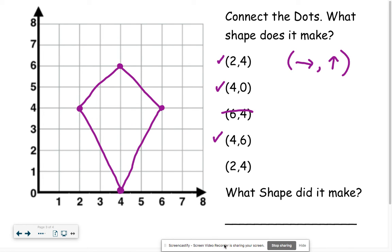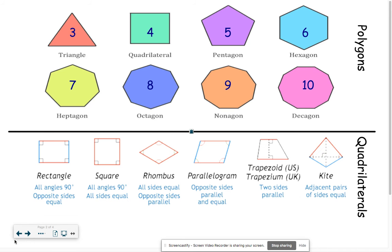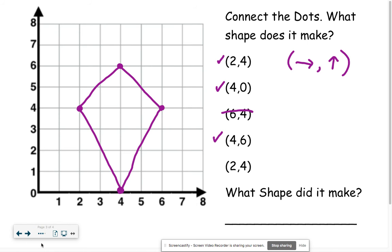Now the last piece of this problem is what shape did it make? Well this is a four-sided shape so if we forgot we can look back at this chart as to what a four-sided shape that might look like this and we'll find out that the kite is what matches it. It has equal adjacent sides. So we would write the name kite down.